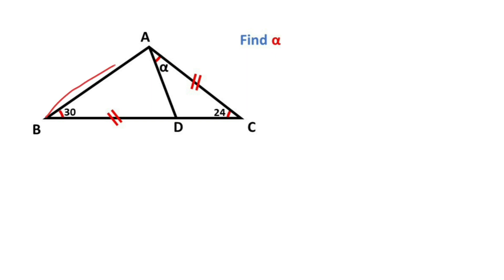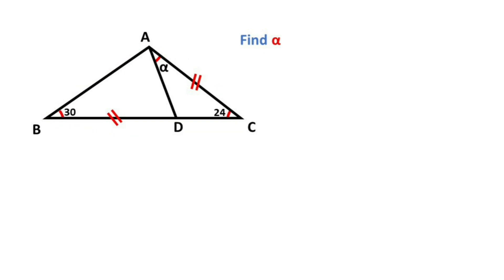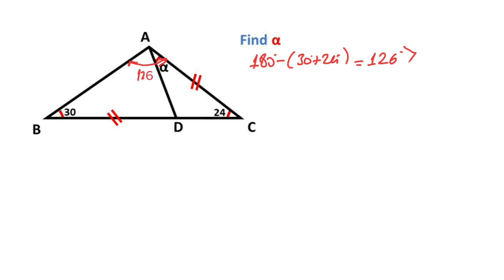First of all, we know that in a triangle, the sum of the interior angles equals 180 degrees. So here, let's calculate: 180 minus 30 plus 24. That means angle BAC equals 126 degrees. That means angle BAC is an obtuse angle.